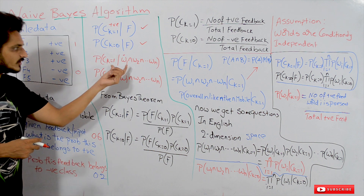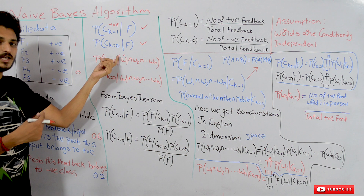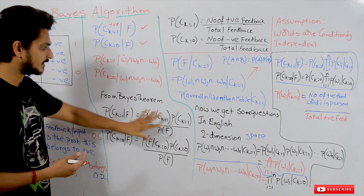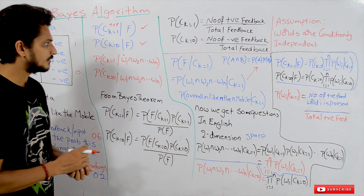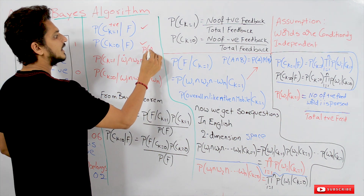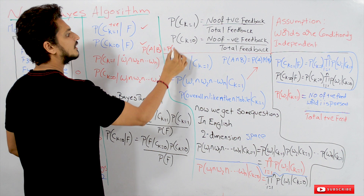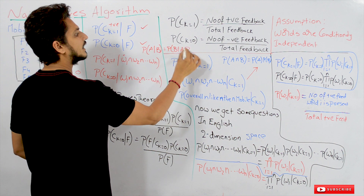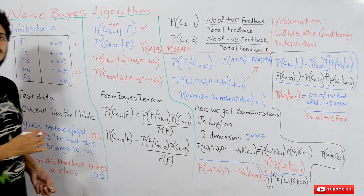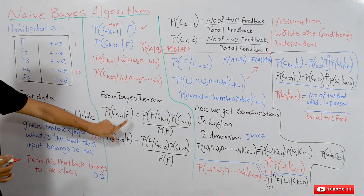Observe carefully — this is conditional probability. In our last class we discussed Bayes' theorem: P(A | B) = P(B | A) · P(A) / P(B). Just use this equation here. P(CK=1 | F) can be written as P(F | CK=1) · P(CK=1) / P(F).